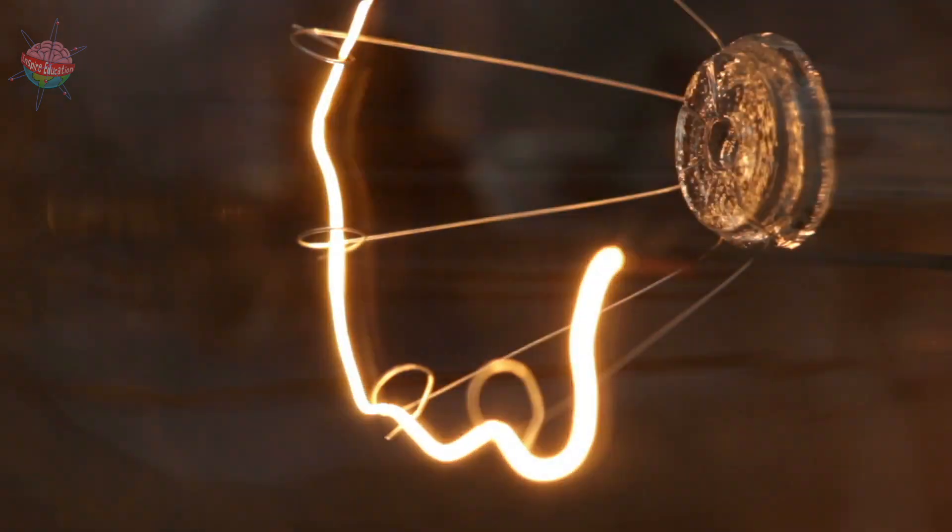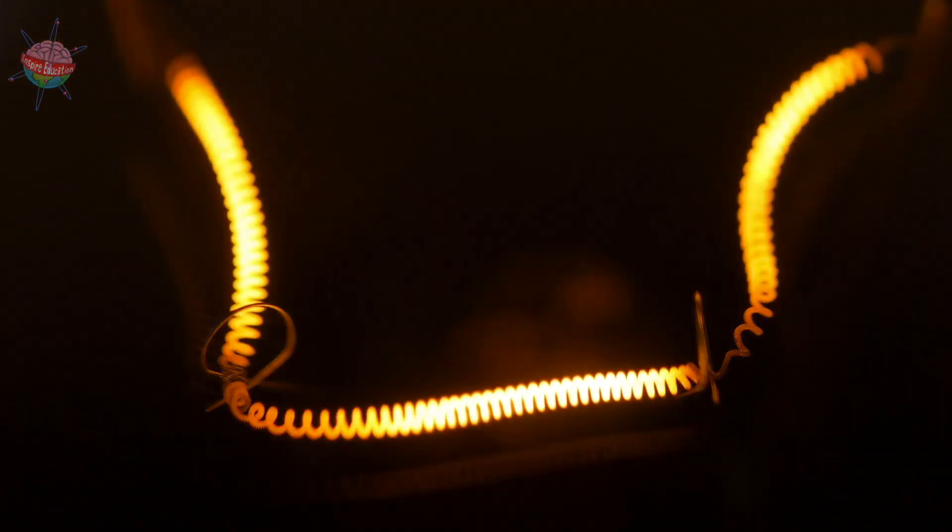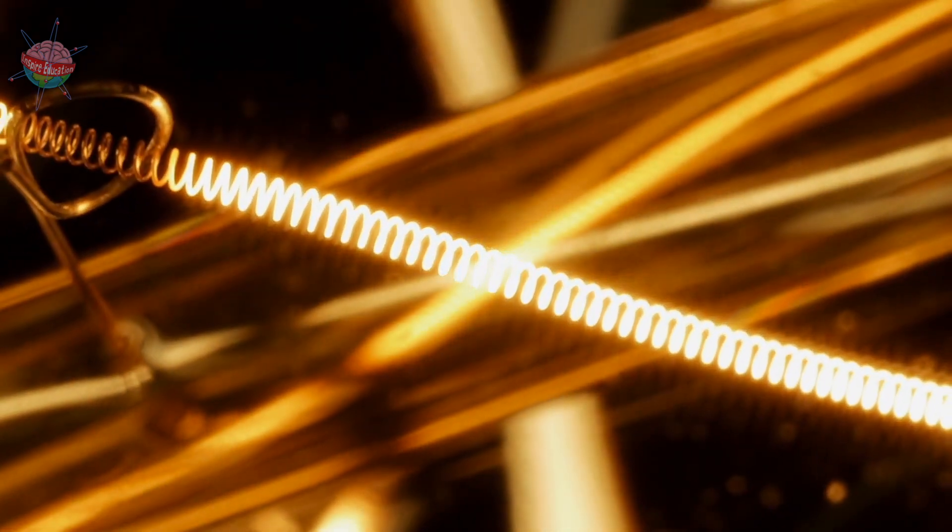Inside the lightbulb is a tiny coil of conductive material called a filament. The electric current heats the filament. Under normal circumstances, it would set on fire.